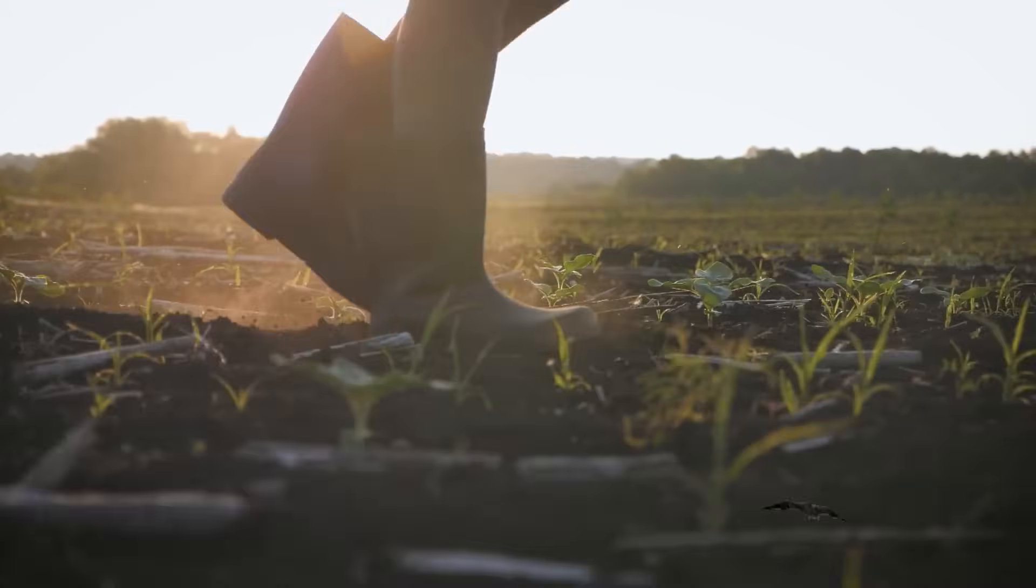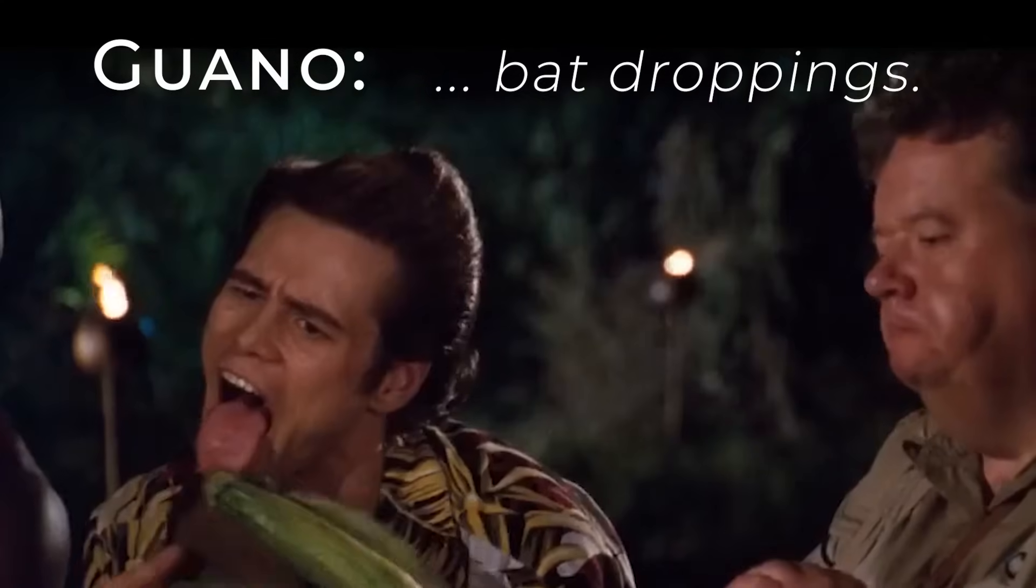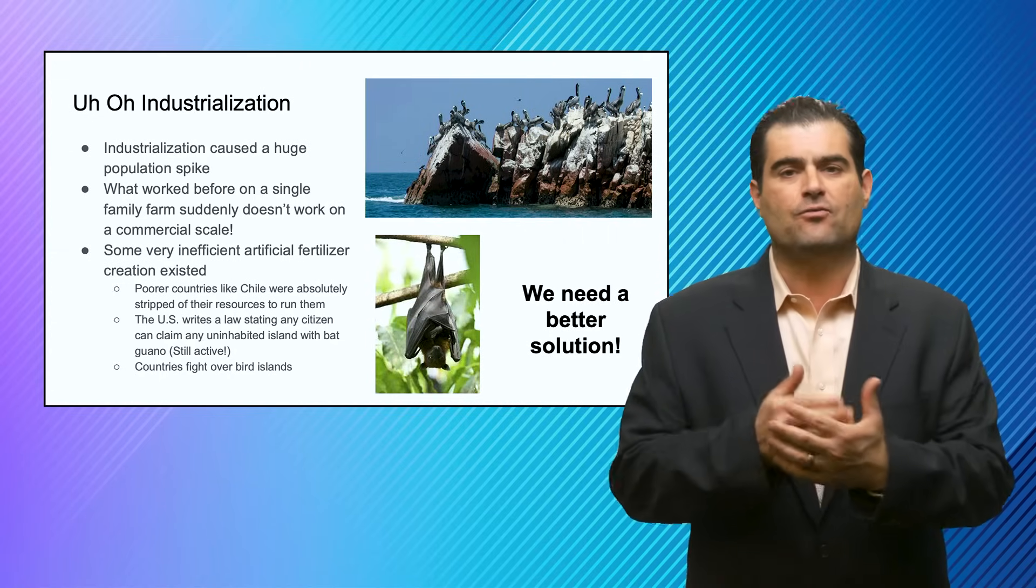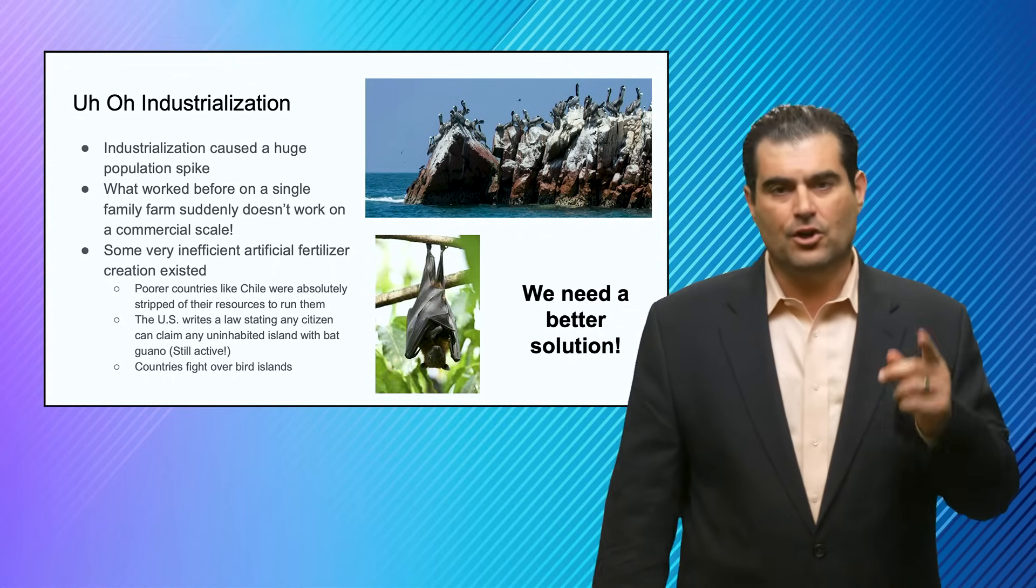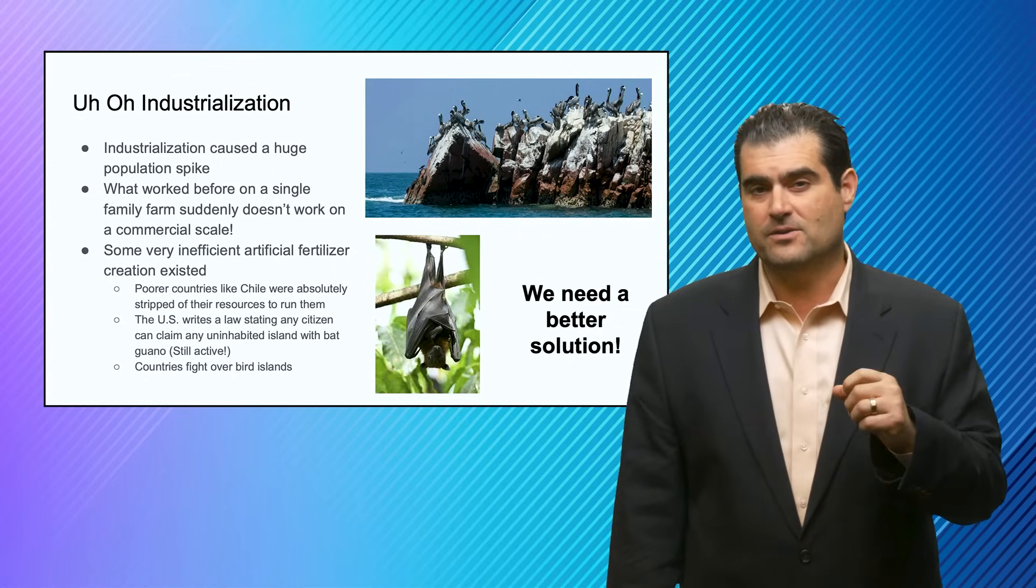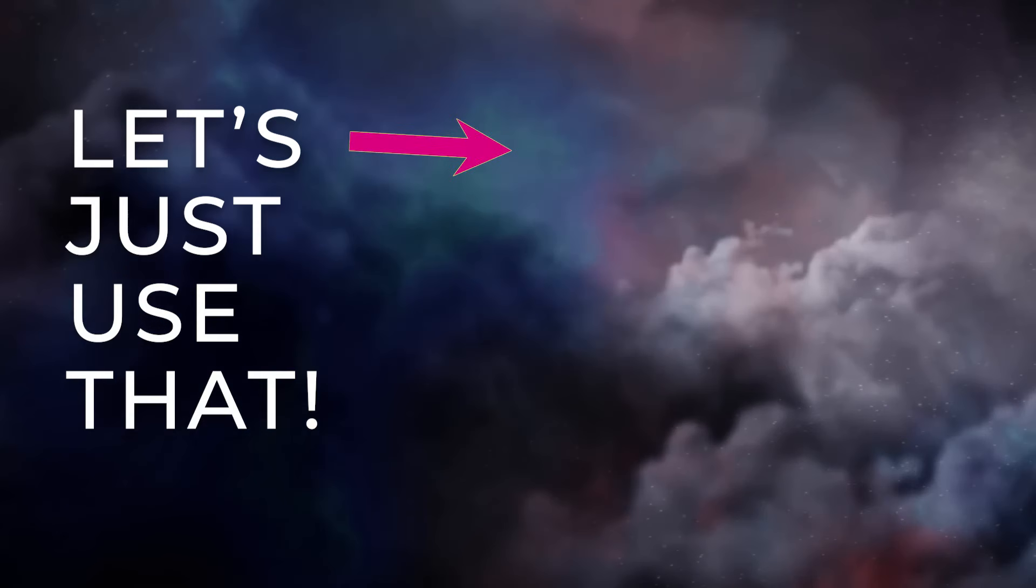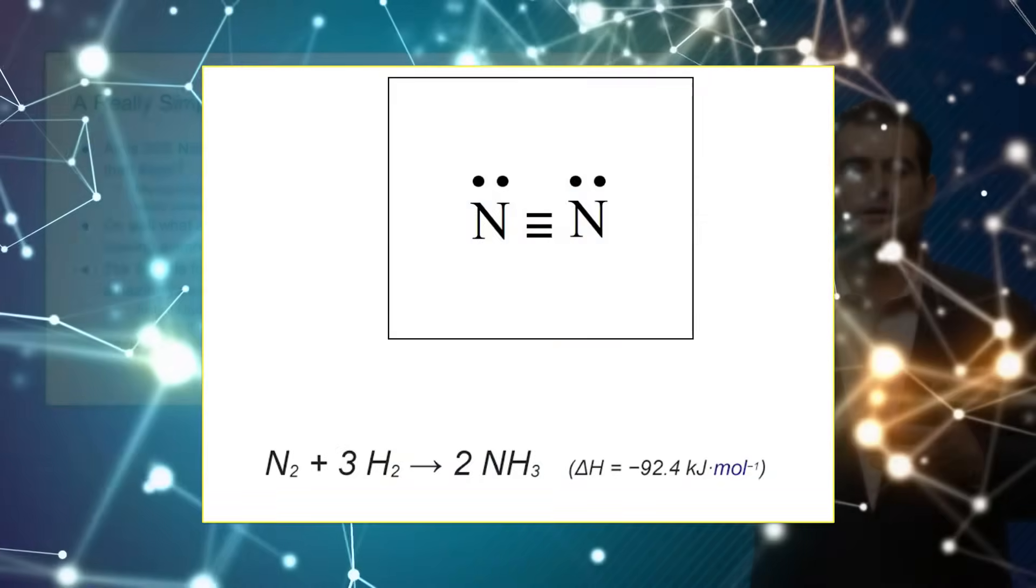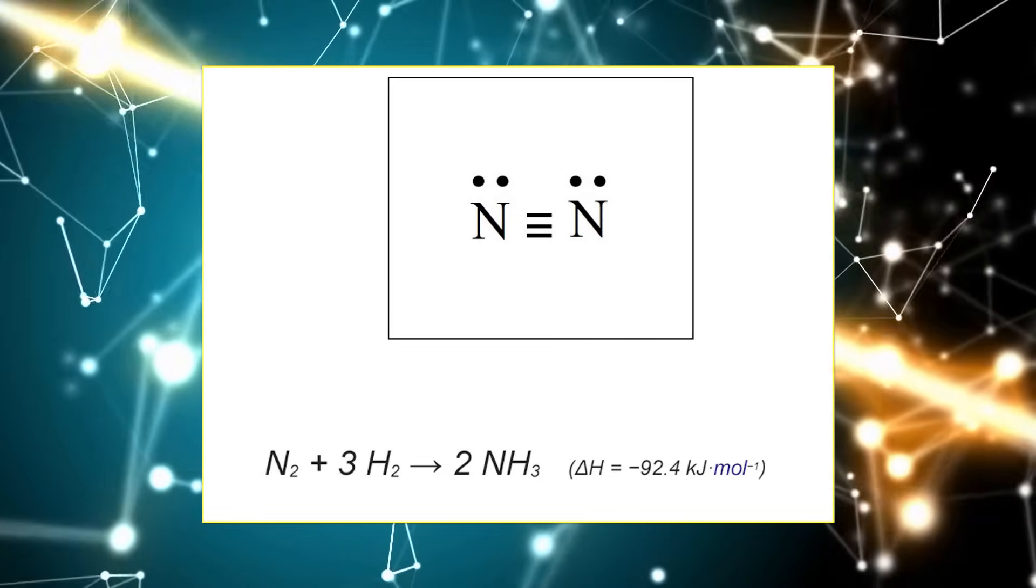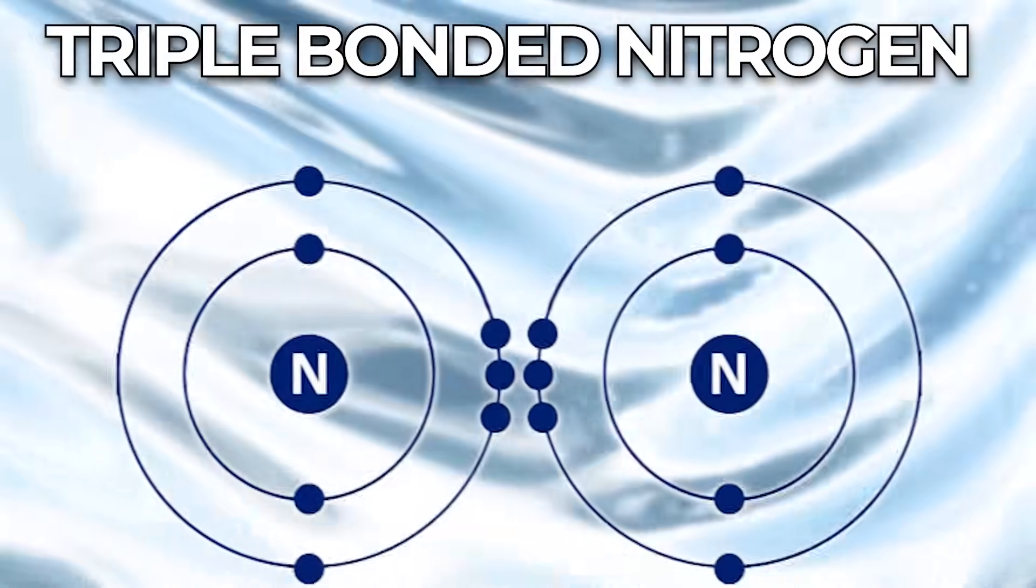Nitrogen is the key for sustaining a planet with 8 billion people on it. The population's been growing exponentially from just about a billion or so in Haber's time to the 8 billion number that we have today. So where are we going to get this nitrogen from? There are sources of natural fertilizers. Fun fact, bat guano can still be used as a source to harvest for fertilization purposes. Now, air is 20% nitrogen. Let's just use that, right? No. No!